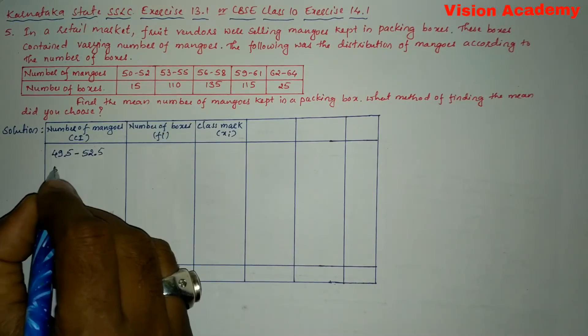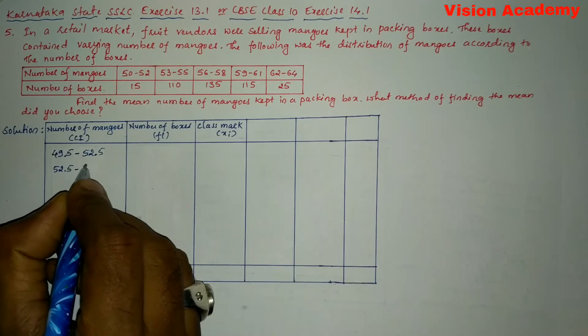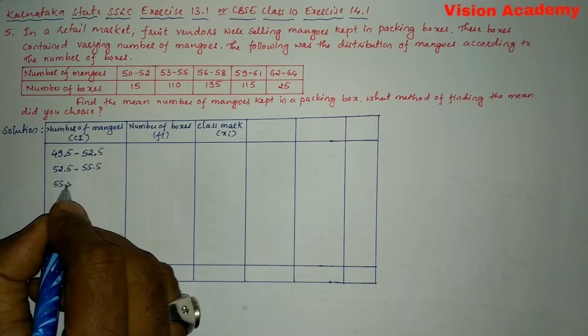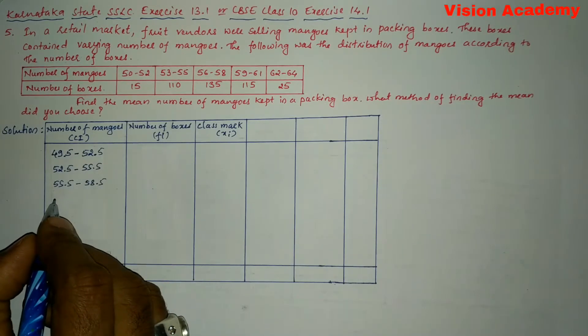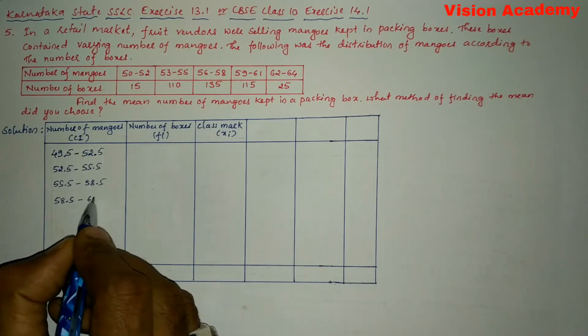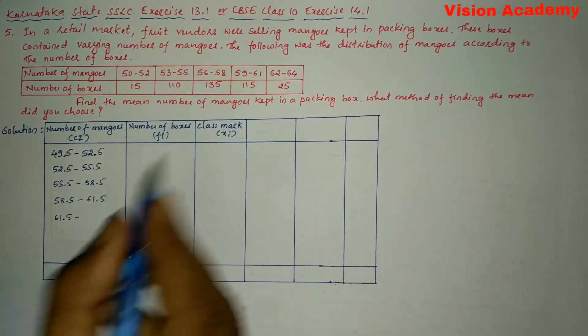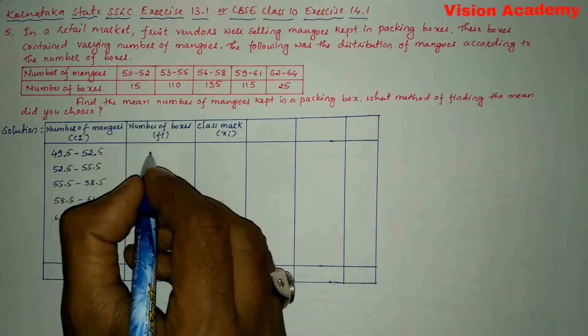So similarly here we will write next is 52.5 to 55.5. Next 55.5 to 58.5. Next we will write 58.5 to 61.5. Next we will write 61.5 to 64.5.